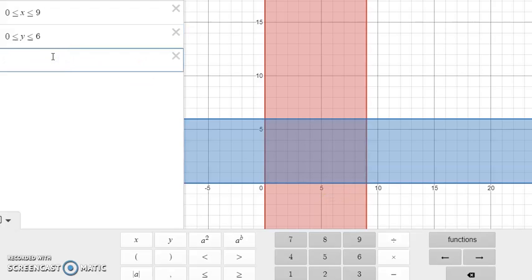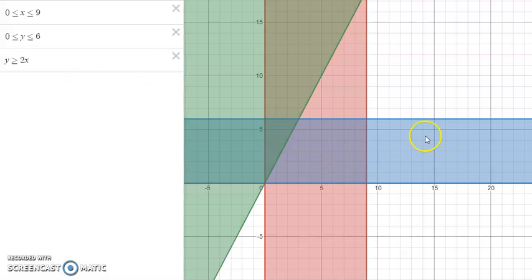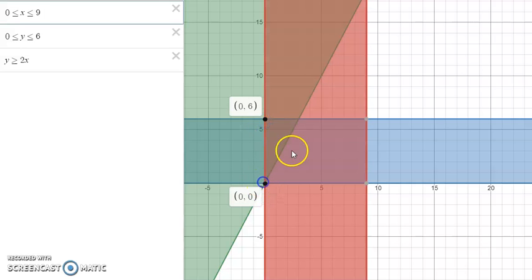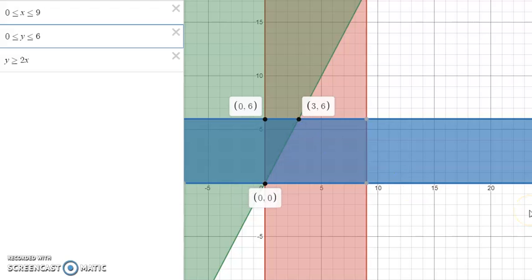And then our other objective function is going to be y is greater than or equal to 2x. And you'll notice that it is crossing over in three locations. That is the overlapping of the three inequalities. So once you have the hang of that, you can just shade the overlapping of the three regions. Or you can shade the whole thing. Just remember to shade it really lightly with a pencil.